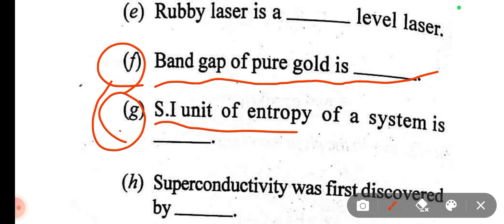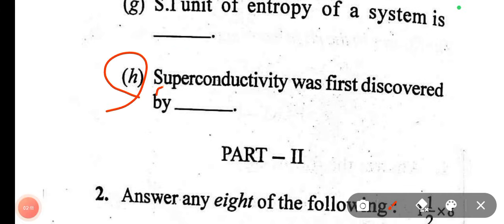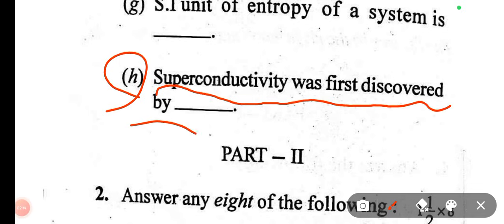SI unit of entropy. Entropy is assigned to the unit. The superconductivity was first discovered by Kamerlingh Onnes. How was it discovered?